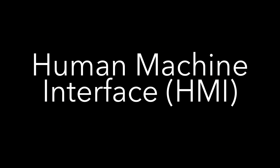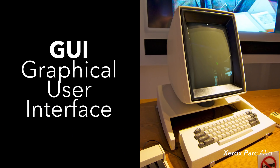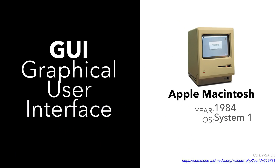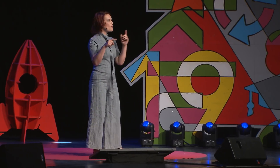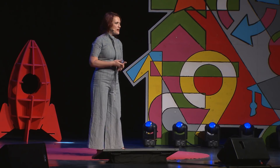Superhumans, when they use their superpowers, they just move their body or think, and the technology amplifies and extends those capabilities beyond what's expected of them. Our superpowers are locked behind something called a human-machine interface.